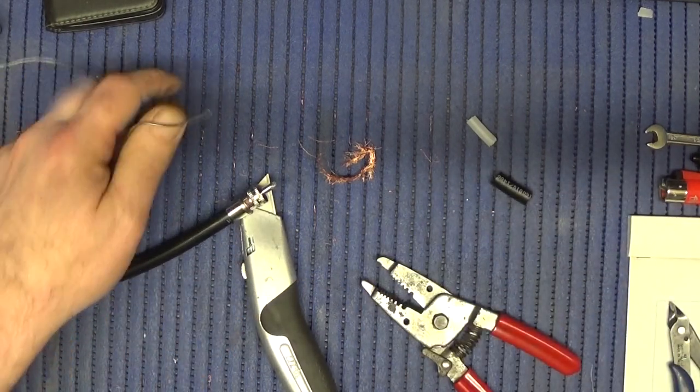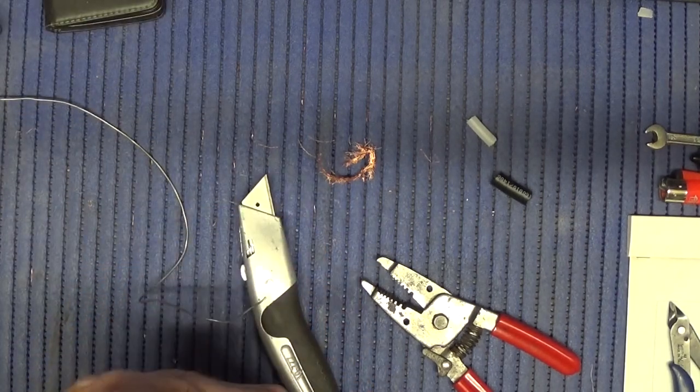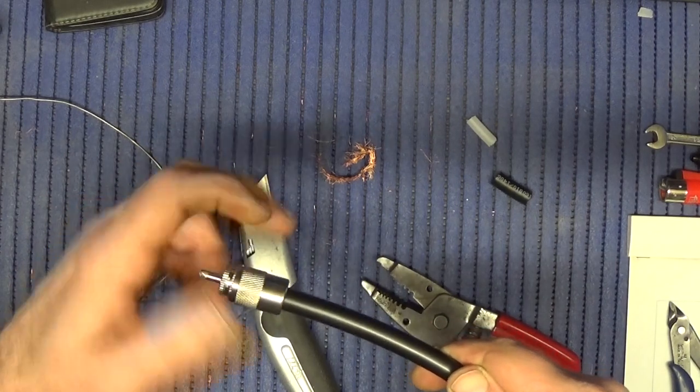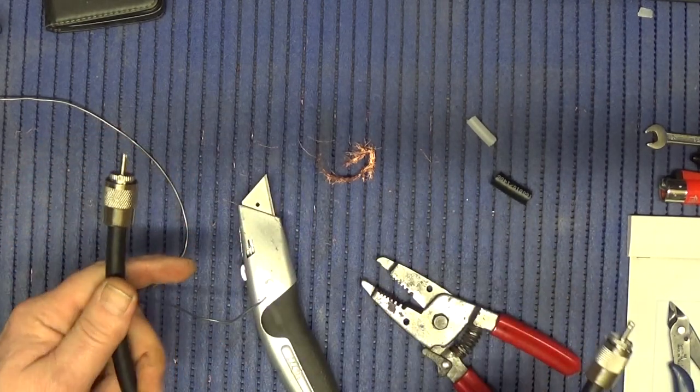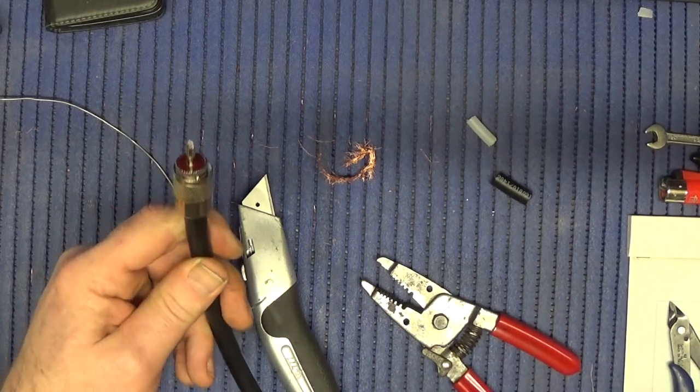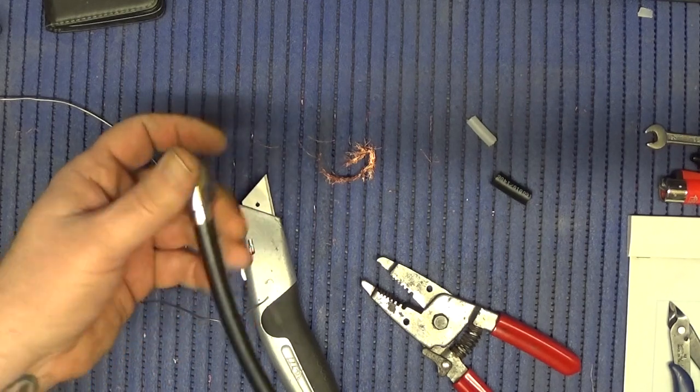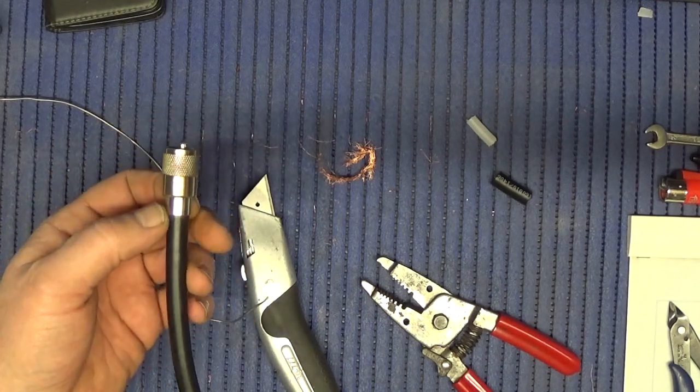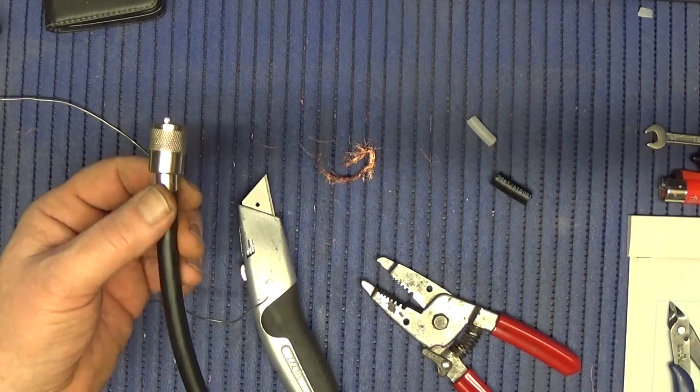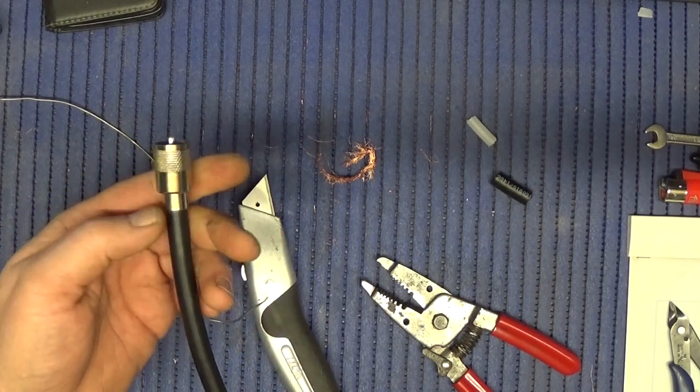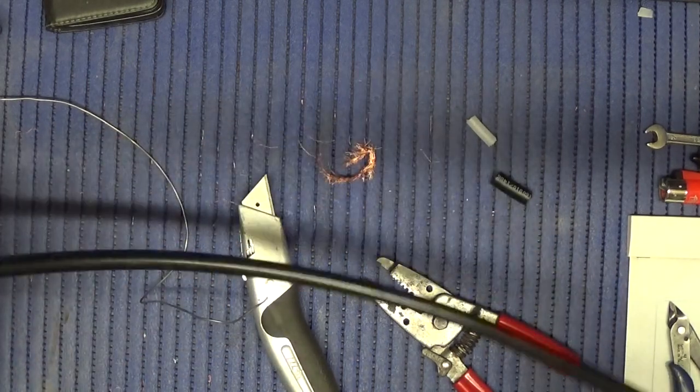And that is your PL259 fitted, nice and simple, nice and easy. Now if you're using these outside, you could put some heat shrink over it or some self-amalgamating tape, something like that.